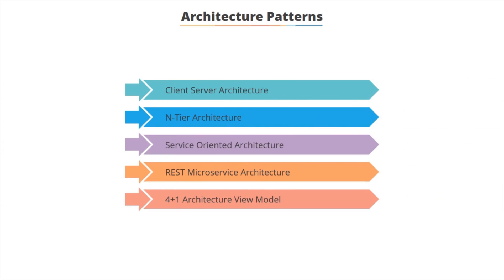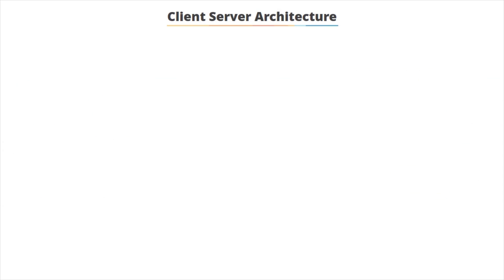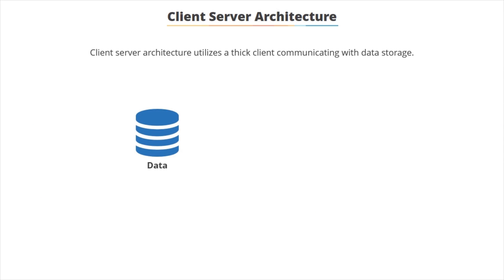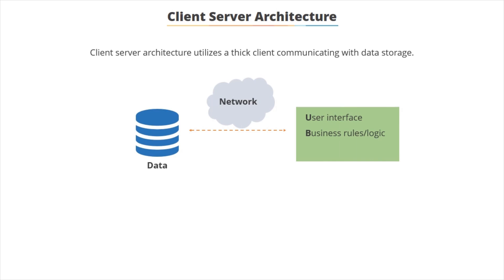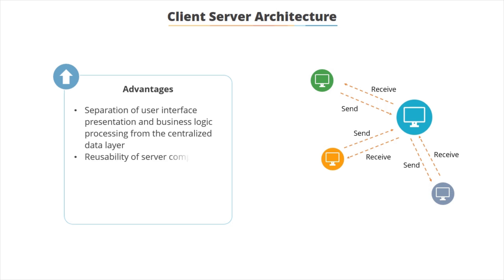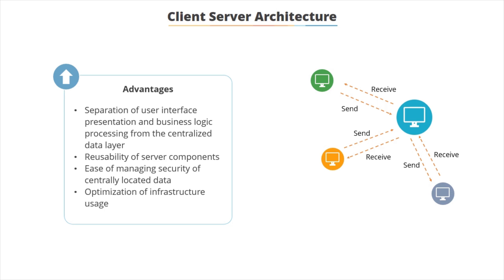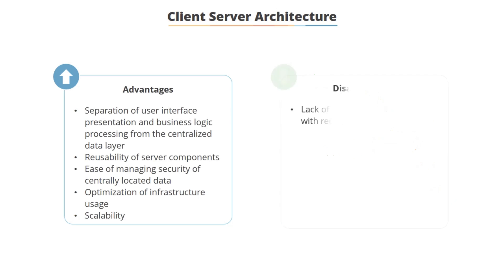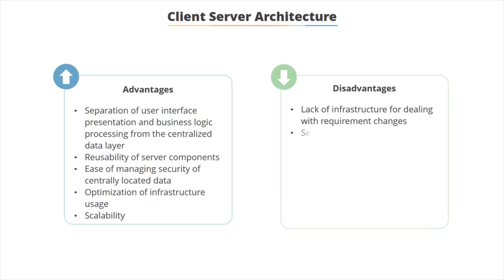The client-server architectural pattern has been around for some time. The idea is we have a thick client which communicates across a network with some external data storage. The thick client has the user interface, the business logic, and the data access layer all in the same unit of functionality. The advantage of this is we basically separate all of the code from the data. It enables the server components to be reused. The server components are managed in some central location, and we can optimize the use of infrastructure. It's also quite scalable.